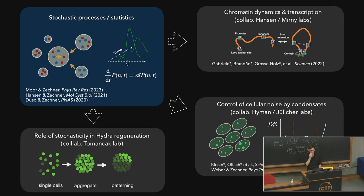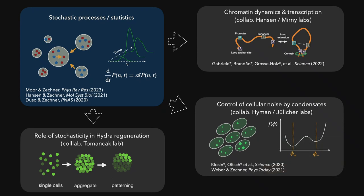To do so, my group focuses on stochastic processes and probability, but we also use concepts from statistical physics and engineering such as control theory and information theory, and we apply these concepts to concrete biological systems in close collaboration with our experimental partners — ranging from the molecular scale, where we are interested in chromatin dynamics and transcription, up to the multicellular scale where we're interested in how stochasticity affects regeneration in hydra. Today I will focus on the mesoscale, where we are interested in understanding how the formation of subcellular compartments can provide robustness to biochemical systems.